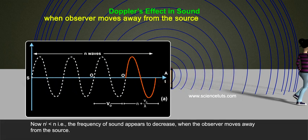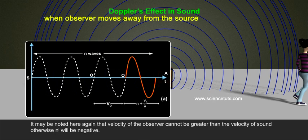Now, n' less than n, that is, the frequency of sound appears to decrease when the observer moves away from the source. It may be noted here again that velocity of the observer cannot be greater than the velocity of sound. Otherwise, n' will be negative.